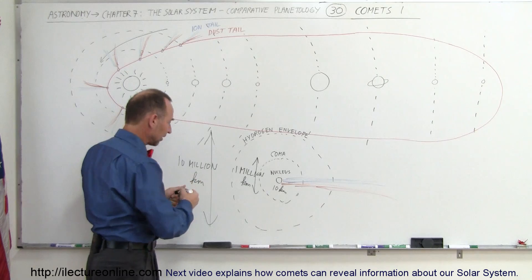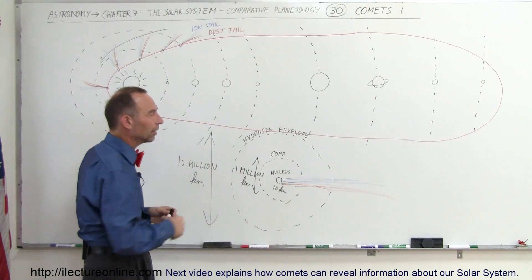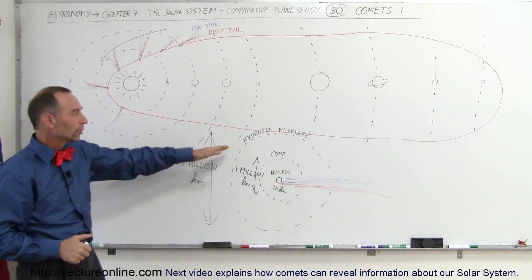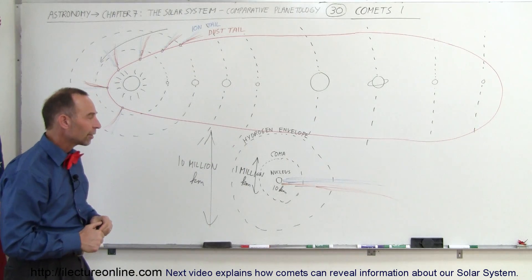That takes a ride along with the comet as it goes around the Sun. This is something that we can only see in the ultraviolet radiation.